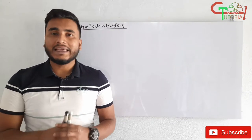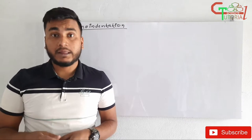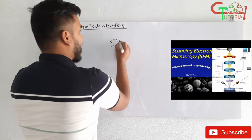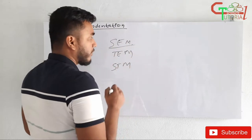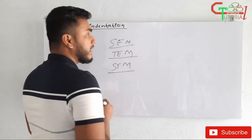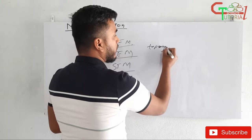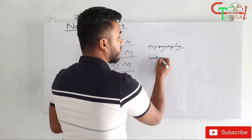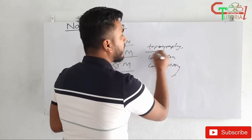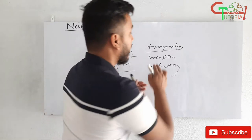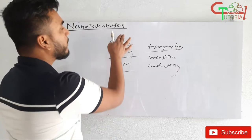Hello friends, welcome to GT Science Tutorial. In this video I am going to explain about nano indentation, which is a very important method for the characterization of nanomaterials. In my previous videos I have already explained about SEM, TEM, and STM — scanning electron microscopy, transmission electron microscopy, and scanning tunneling microscopy. By using these techniques, information such as topography, composition, and conductivity of nanomaterials can be obtained.